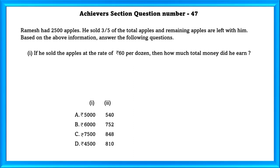Achievers section question number 47. Ramesh had 2500 apples. He sold 3 by 5 of the total apples and remaining apples are left with him. Based on the above information, answer the following questions. If he sold the apples at the rate of 60 rupees per dozen, then how much total money did he earn?